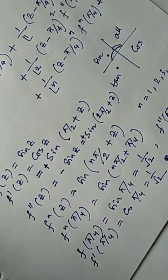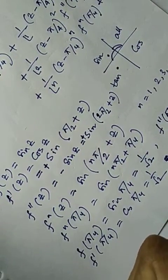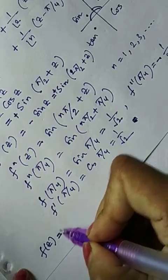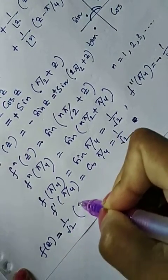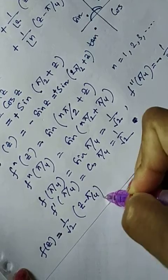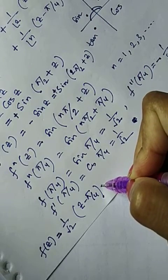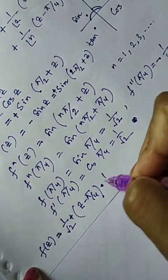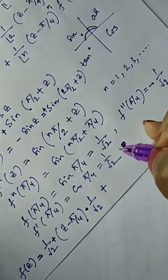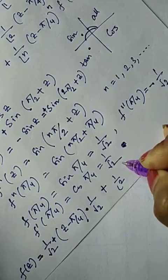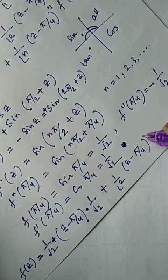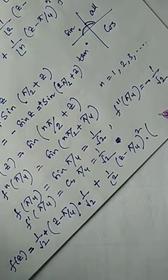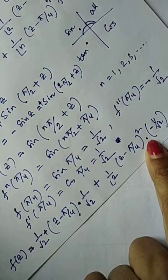...you will get the Taylor series as: f(z) = sin(z) = 1/√2 + (1/√2)(z − π/4) + (1/2!)(z − π/4)²(−1/√2) + ... and so on.